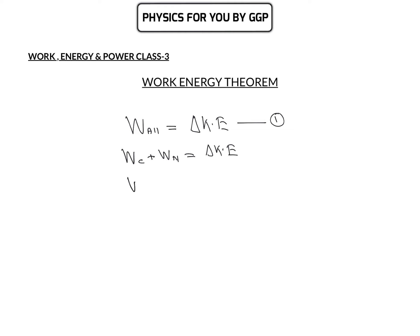We can rearrange to say work done by non-conservative force equals change in kinetic energy minus work done by conservative force. Since the negative of work done by a conservative force equals change in potential energy, if we consider only non-conservative forces, we write: W_non-conservative = ΔKE + ΔPE. So if you are using potential energy in a problem, do not separately include work done by conservative forces.